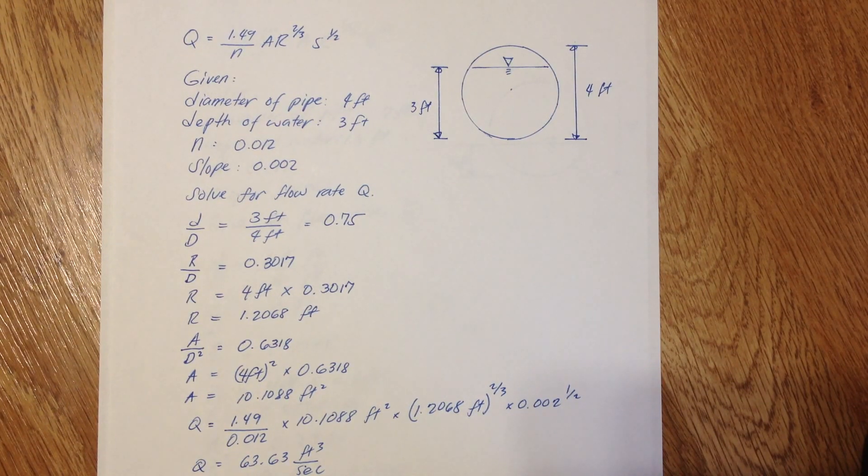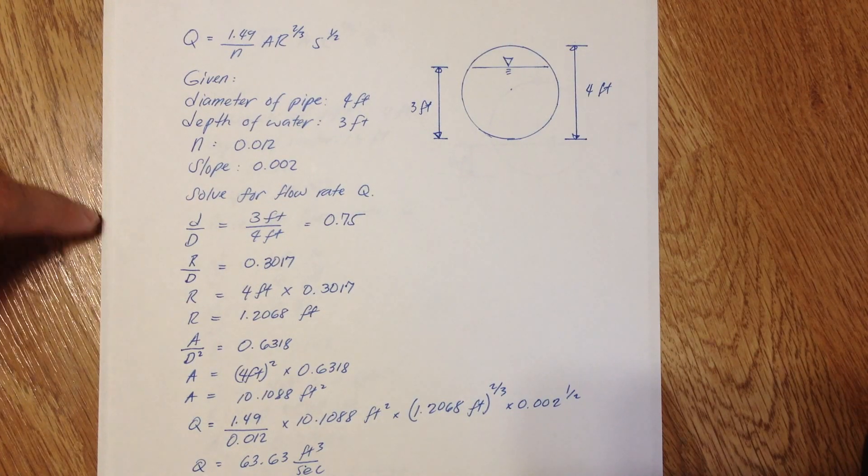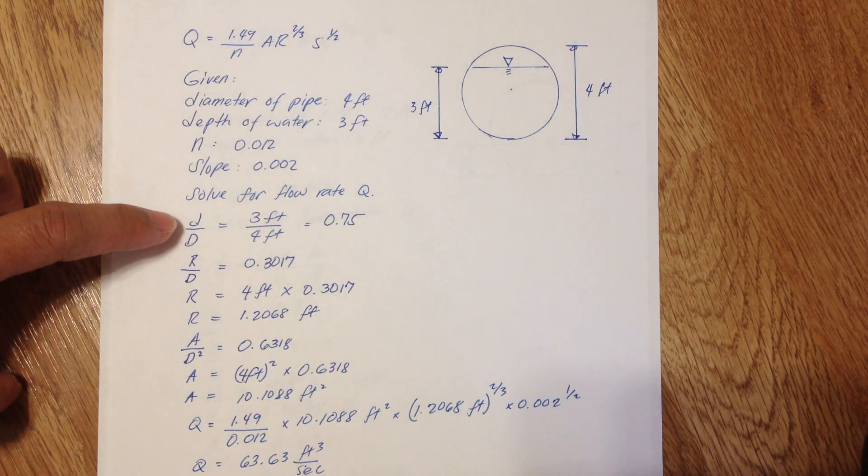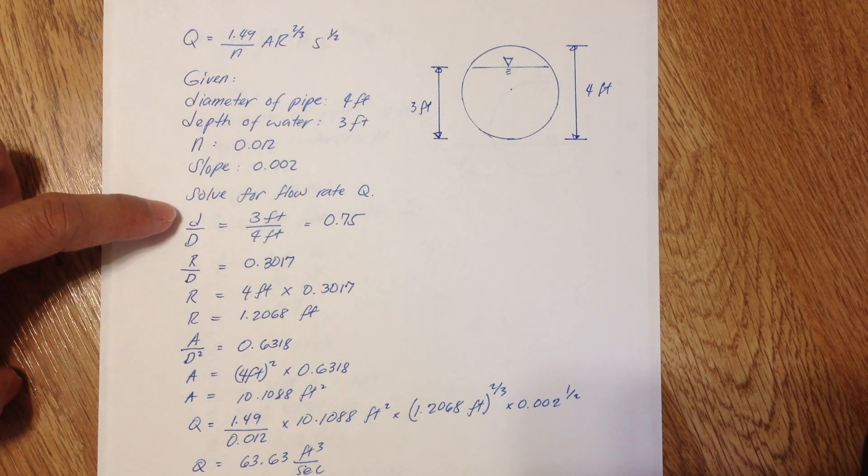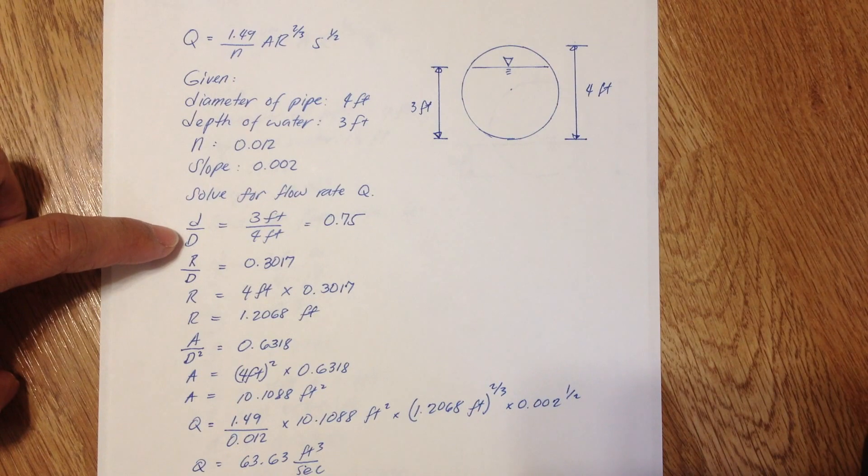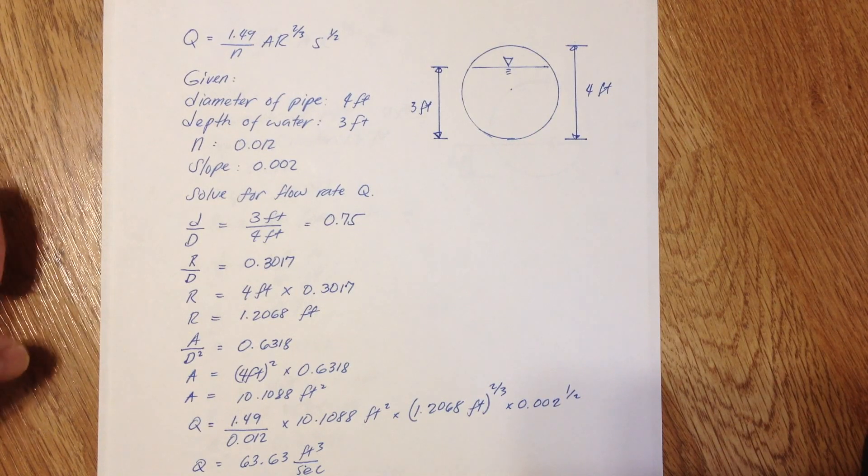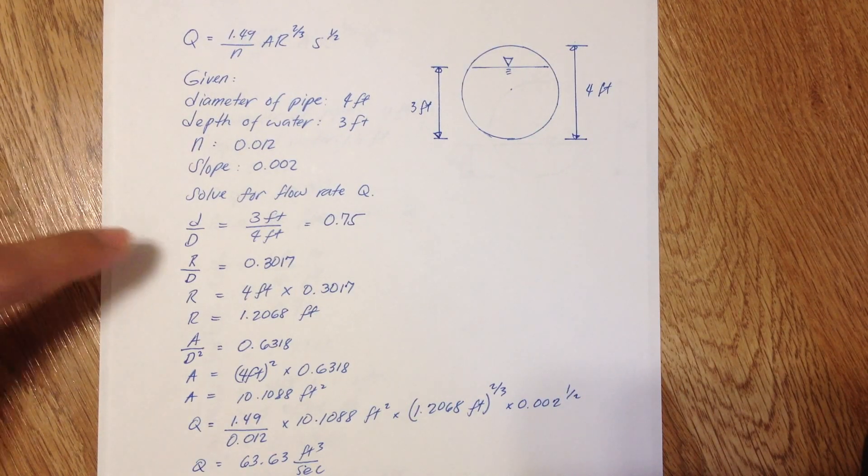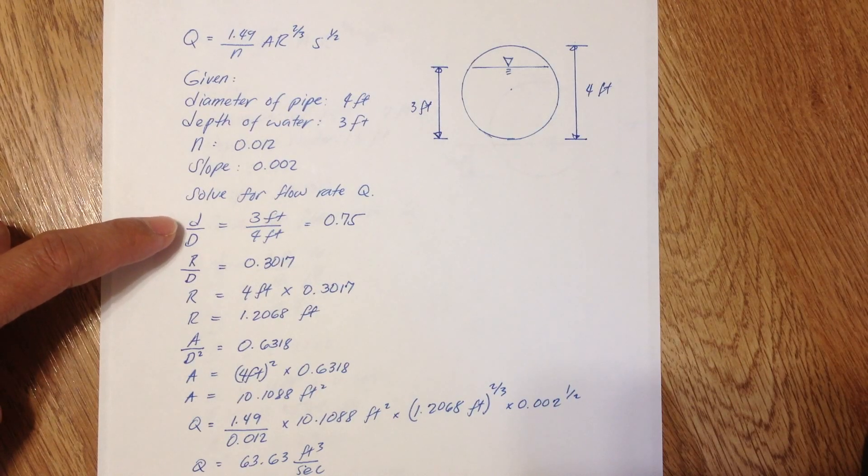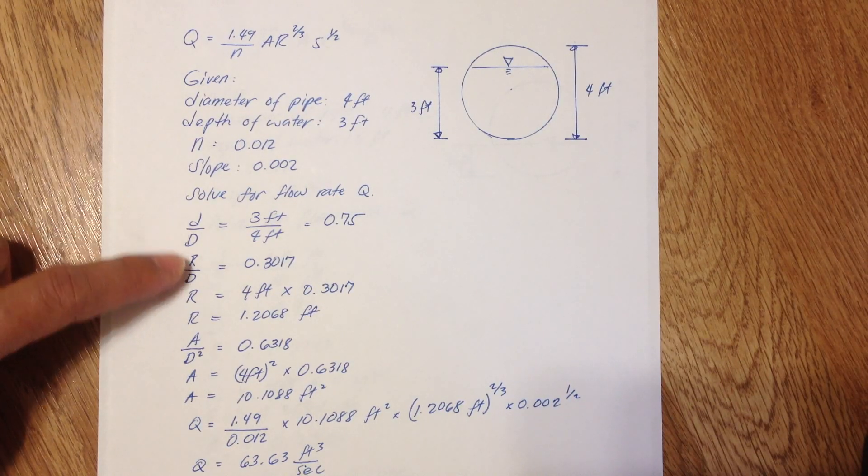Now one of the methods in calculating this flow rate is to use the table that can be found in the appendix of the CERM, or Civil Engineering Reference Manual. First we need to find the value of smaller D divided by the larger D. The smaller D is the depth of water and the larger D is the diameter of the pipe, which is 0.75.